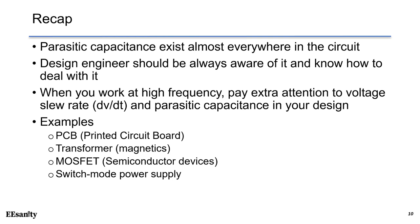In recap, parasitic capacitance exists almost everywhere in a circuit, as illustrated by the examples in this lecture. As an engineer, we should always be aware of it and know how to deal with it. When working at high frequency — especially for switch mode power supplies or high-speed circuits — you must pay attention to the voltage slew rate dv/dt and parasitic capacitance. Examples covered include PCB, transformers or inductors, MOSFETs, and switch mode power supplies. Thank you and see you next time.